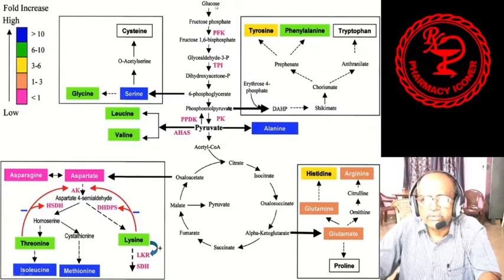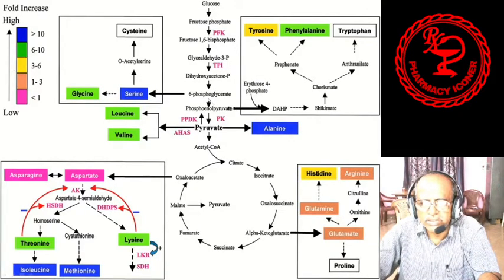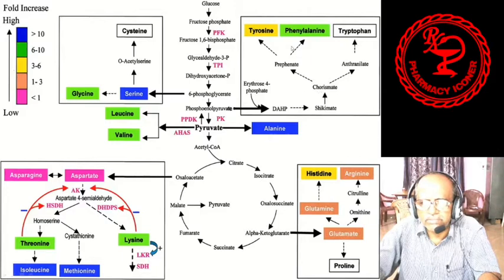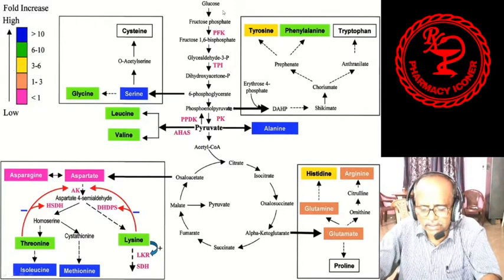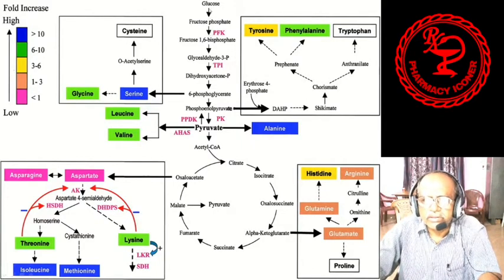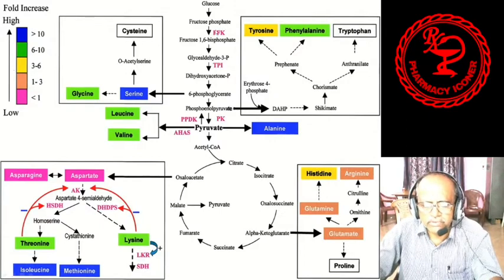Now the main amino acid pathway goes through two cycles: one is the shikimic acid pathway, and the other is the citric acid cycle, also called the Krebs cycle. Starting from glucose, by the process of glycolysis, glucose is broken down to form fructose phosphate.